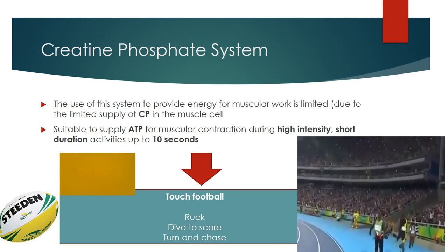The use of this system to provide energy for muscular work is limited by the small supply of creatine phosphate in the muscle cells. As a result, it's used to supply ATP for muscular contraction only in high-intensity, short-duration activities for up to 10 seconds of work. Other examples include weight lifting, long jump, and short athletic events.